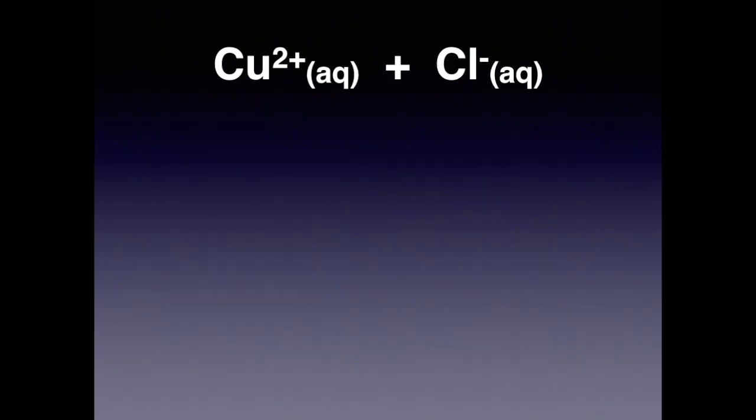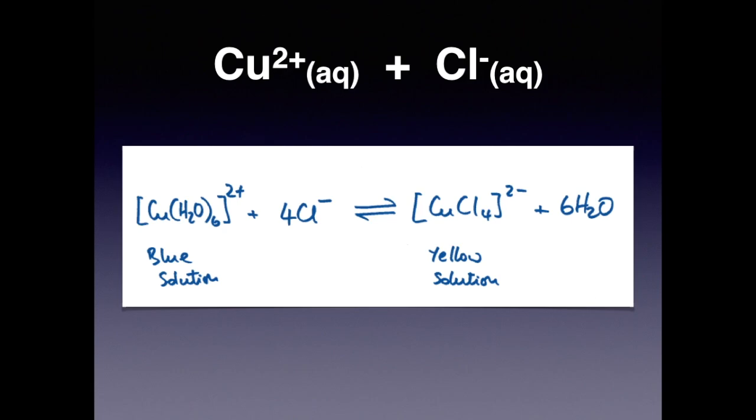We'll start with the reaction between aqueous copper 2 plus ions and aqueous chloride ions. So there's the reaction there. You can see we're starting with the copper hexaaqua 2 plus ion, which is blue. We're reacting that with chloride ions, 4 in this case, and we produce this new complex ion CuCl4 2 minus and 6 waters.